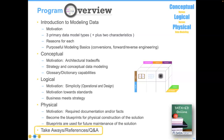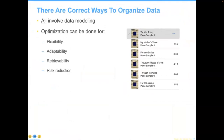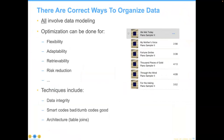So we're headed towards the Q&A part, but a couple more things to sum up. There are correct ways to organize data — all involve modeling data, so if data modeling is not being done, it is incorrect by definition. Flexibility, adaptability, retrievability, and risk reduction are all ways of optimizing your design. Techniques include data integrity — remember when that bridge joined and made it stronger? Data integrity is very much like that. Also remember: smart codes are bad and dumb codes are good. They understood the concepts around figuring out some of these old ways of doing things.